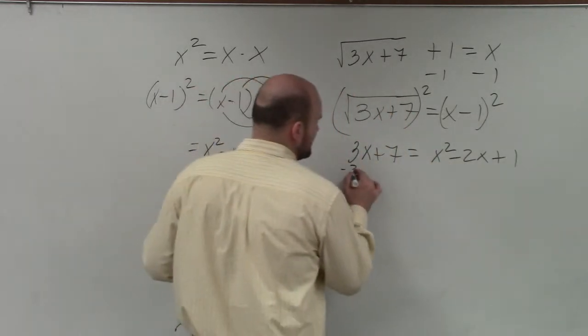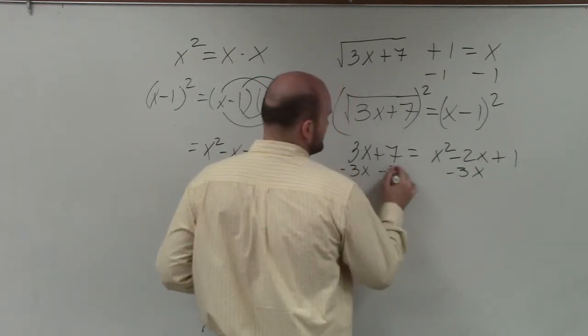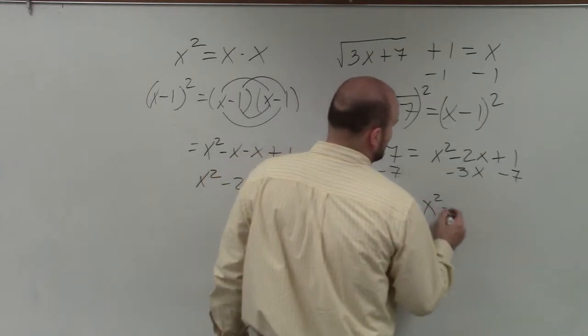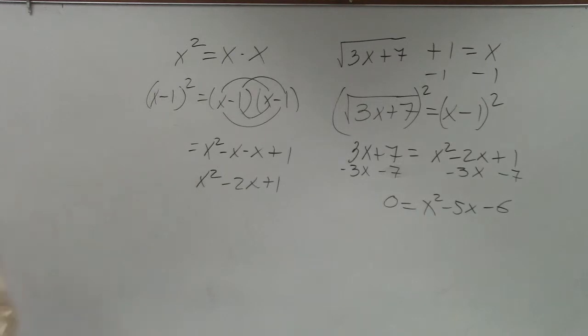So what I'm going to do is I'm going to subtract 3x on both sides, and I'm going to subtract 7 on both sides. By doing that, I get 0 equals x squared minus 5x minus 6. So now I have an equation that is set equal to 0. And the reason why that's so important is because now I can factor it and apply the zero product property.